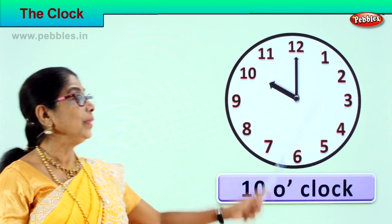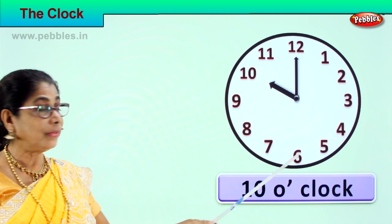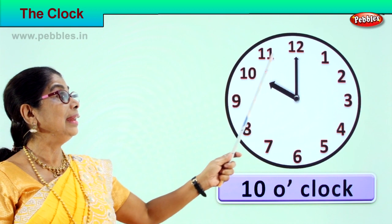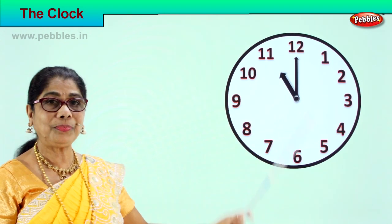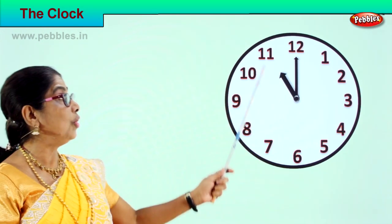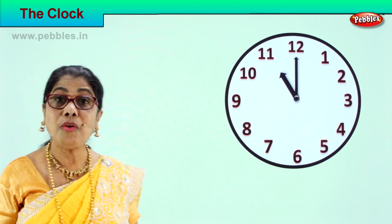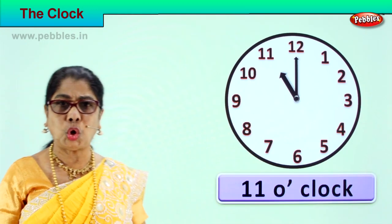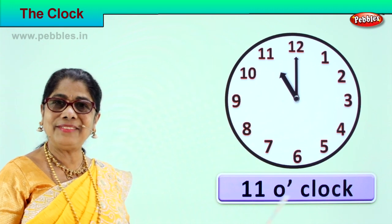Now the minute hand goes from one, two, three, four, five, six, seven, eight, nine, ten, eleven — it comes back to twelve, and the hour hand from ten shifts to eleven. The hour hand is on eleven and the minute hand is on twelve. How do we read this time? We read it as eleven o'clock. Eleven o'clock.